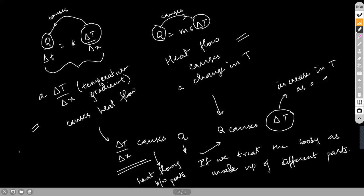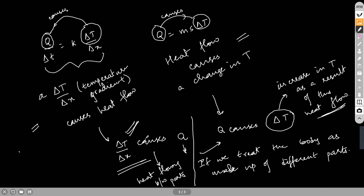You can see that there is a sort of loop situation forming here. There is a temperature gradient which causes heat flow between parts of the body. That heat flow affects the very temperature gradient which is causing it, based on the specific heats of the parts of the body. This is our key to combining these equations and generating the heat flow equation.